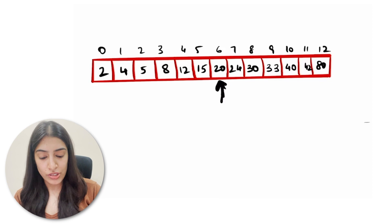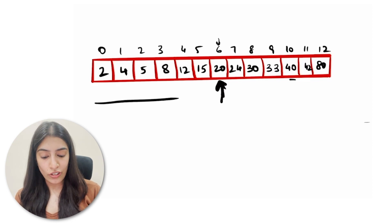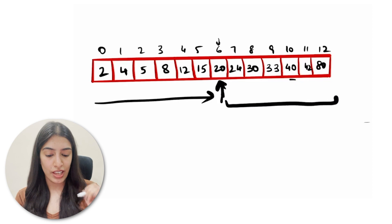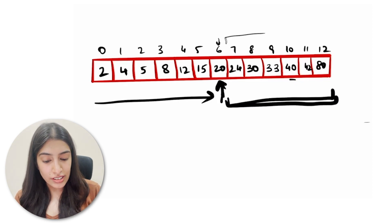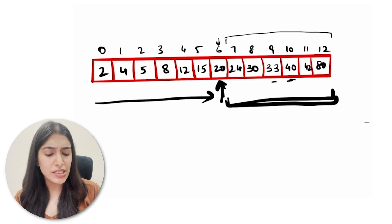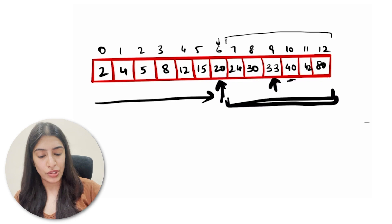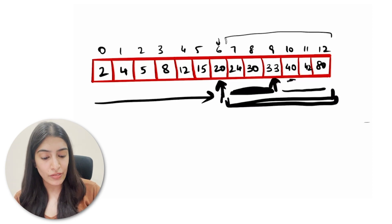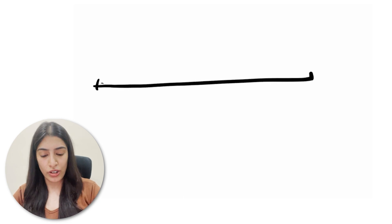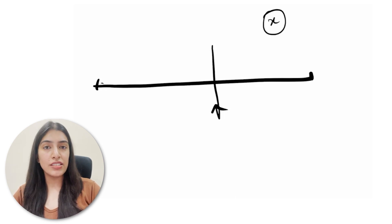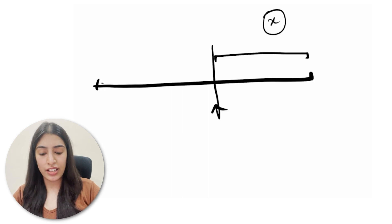Let's go through an example — suppose we are searching for 40. We check the middle: at index 6, the value is 20. We are searching for 40. Since 40 is greater than 20, it cannot be in the first half — it is definitely in the second half. So we search in the portion from 24 to 80. We take the middle element of those six elements; say we get 33. Since 40 is greater than 33, we don't have to check the left side of 33 — we check the right side only.